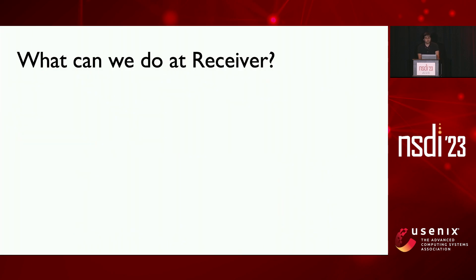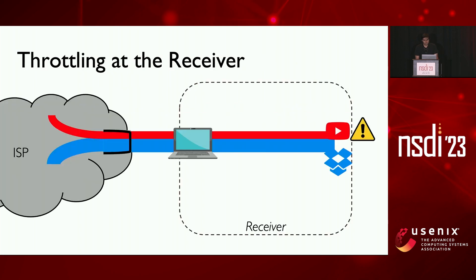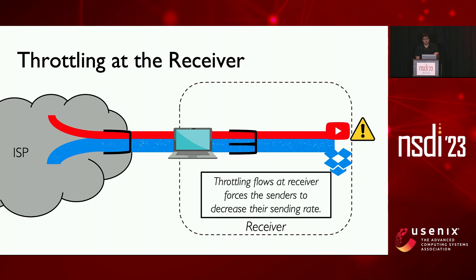So what can we do at the receiver? Well, if we somehow had an estimate of link bandwidth, we could calculate the weighted fair share of each flow and throttle them to that rate. Throttling at the receiver works because senders almost always use some kind of rate control in the form of congestion controllers, which would react to signals like packet drops or delays introduced by throttling, and thus the senders would back off on their sending rate in a few RTTs. But for now, let's assume that we know what the link bandwidth is.